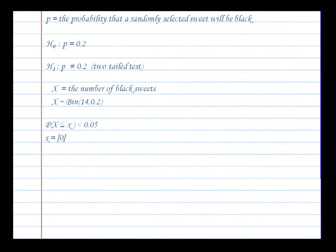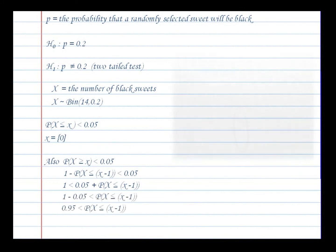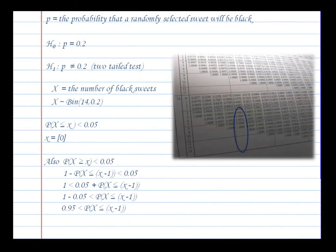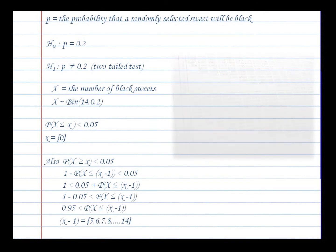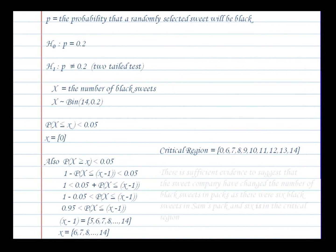Because we're doing a two-tail test we also need to check the other end. Checking our tables for values greater than 0.95 shows us that values of X minus 1 will be 5 up to 14. Adding one to each of these gives us X values from 6 up to 14. So our critical region contains 0 and then the numbers 6 up to 14.